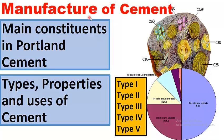Hello guys, I am here with a new topic about cement. In this video lecture we will learn about the manufacturing of cement, the main constituents of Portland cement, and the types: Type 1, Type 2, Type 3, Type 4, and Type 5 — their properties and uses. We will discuss these main points one by one, so please watch the complete video to get familiar with this topic. Let's start.